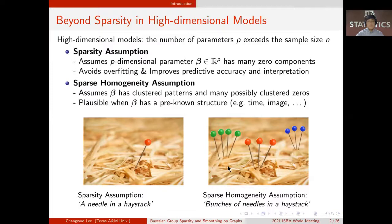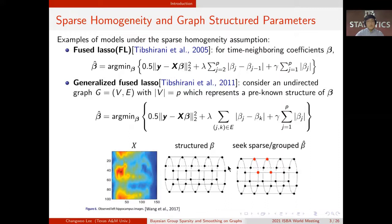Fused lasso is a popular example of model under the sparse homogeneity assumption. When beta is associated with time, it is plausible to assume that adjacent parameters have the same value, so fused lasso imposes L1 penalty on the successive differences, as well as individual parameters. The concept of time neighboring can be further generalized, so that structure of beta can be represented as a graph.